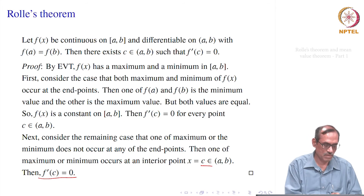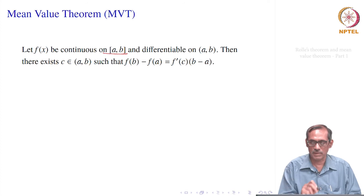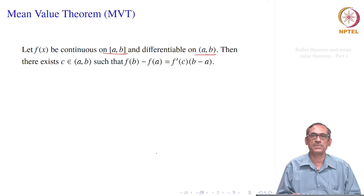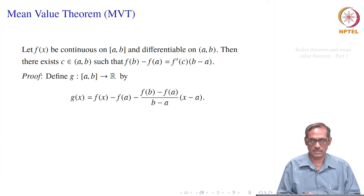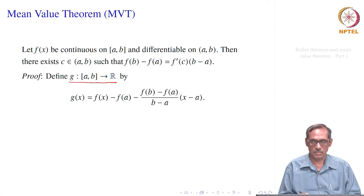The first application of Rolle's theorem is a slight generalization — the mean value theorem. We still assume f(x) is continuous on [a, b] and differentiable on (a, b), but we do not assume f(a) = f(b). Then there exists a point c such that f'(c) = (f(b) − f(a)) / (b − a). We will see how to prove this first.